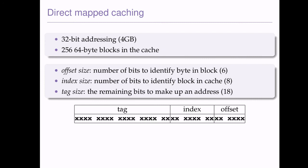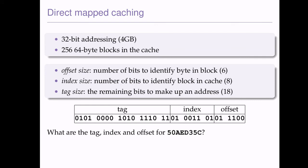Let's see how this works with a specific address. We take a hex address, convert it to binary, and place it into our bit fields. It doesn't always line up perfectly along word boundaries, and that's okay — we just need to figure out the tag, index, and offset under this caching convention. The offset — reading the lowest 6 bits — comes out to 1C. Then the next 8 bits for the index give us 1101, which is 14, or D, so we get 4D.